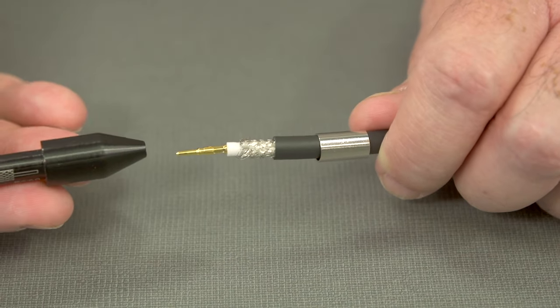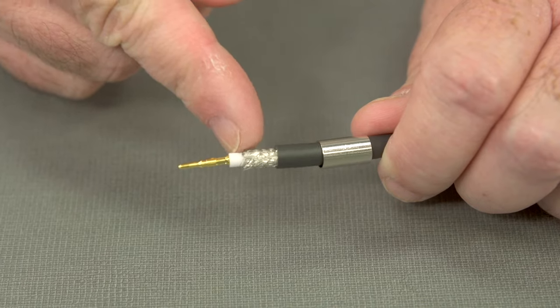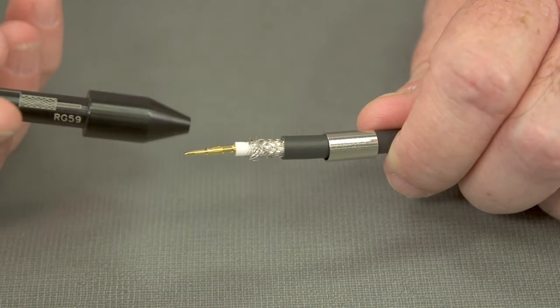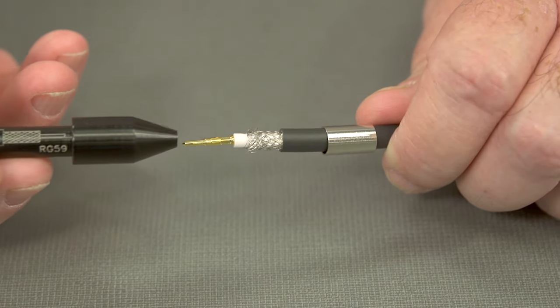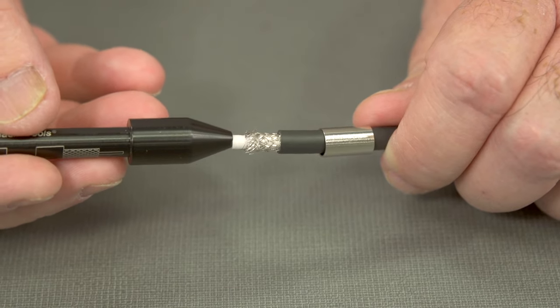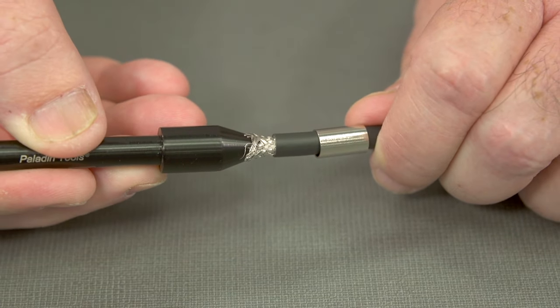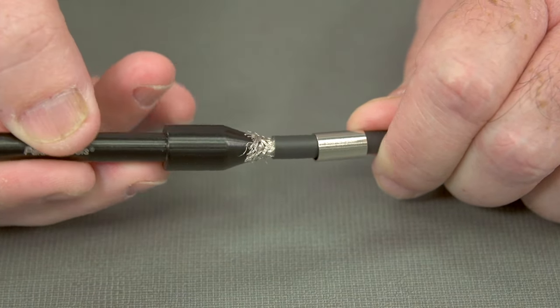Now we'll use our flaring tool to flare out the braided shield. For an RG-59, slide it over the dielectric. Give it a push so it pushes it out nice for us.